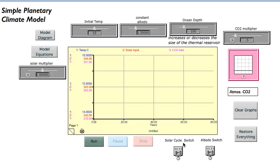It also has a couple of switches down here: one for solar cycle and one for albedo. This albedo switch is the most important for this problem. When in this position, it's off, and we have a constant albedo assigned in this box.